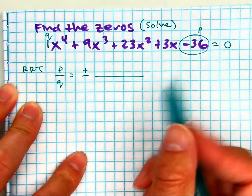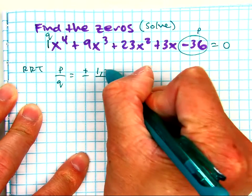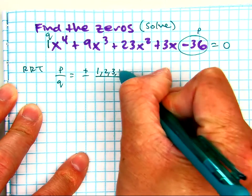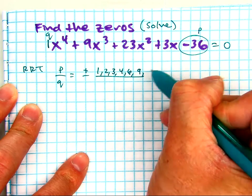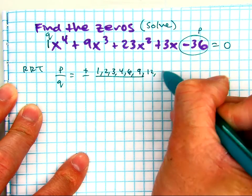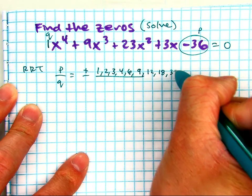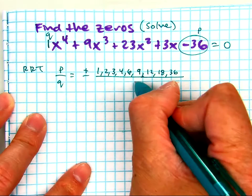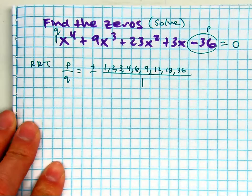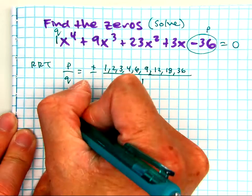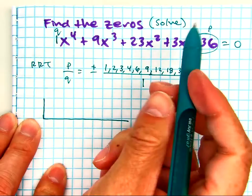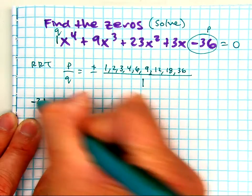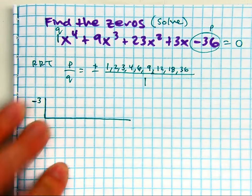So what are the factors of 36? One, two, three, four, six, nine, twelve, eighteen, thirty-six. And your q value is just one. And what number did you guys pick? Just try. Negative three.